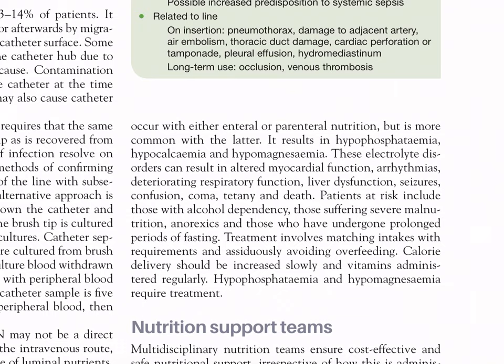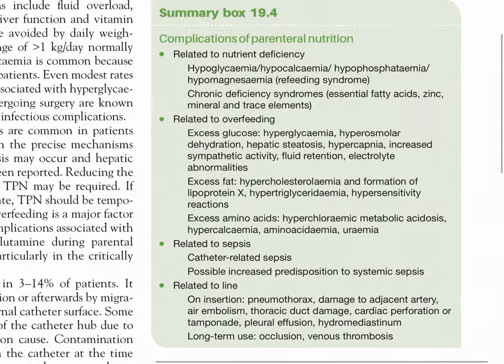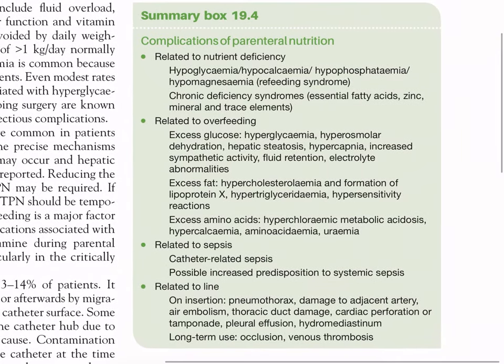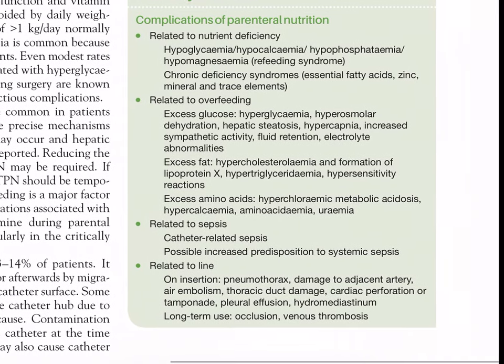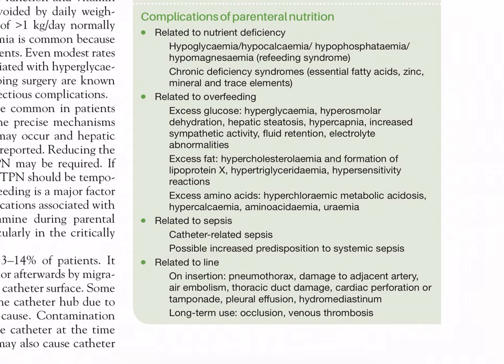Treatment involves matching intakes with requirements, assiduously avoiding overfeeding. Calorie delivery should be increased slowly, vitamins administered regularly, and hypophosphatemia and hypomagnesemia treated. Summary Box 19.4 — Complications of parenteral nutrition: related to nutrient deficiency (hypoglycemia, hypocalcemia, hypophosphatemia, hypomagnesemia, refeeding syndrome, chronic deficiency syndromes, essential fatty acids, zinc, minerals, trace elements); related to overfeeding (excess glucose: hyperglycemia, hyperosmolar dehydration, hepatic steatosis, hypercapnia; excess fat: hypercholesterolemia, lipoprotein X formation, hypertriglyceridemia; excess amino acids: hyperchloremic metabolic acidosis, hyperammonemia, uremia); related to sepsis and line insertion complications.